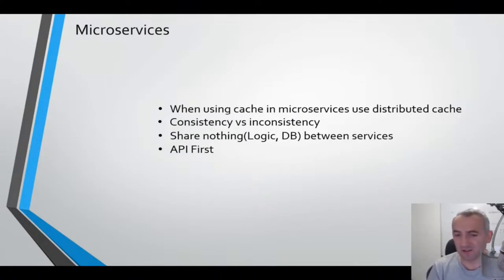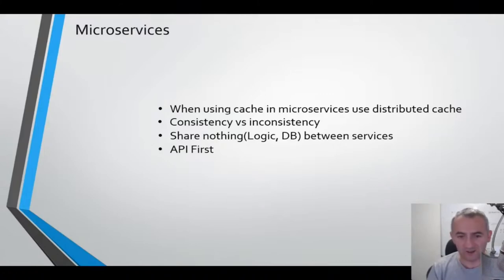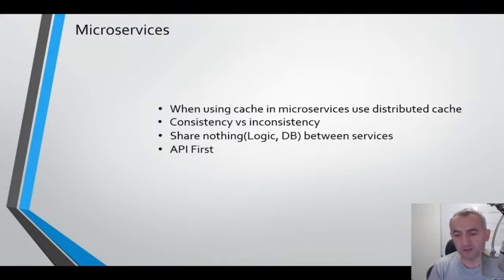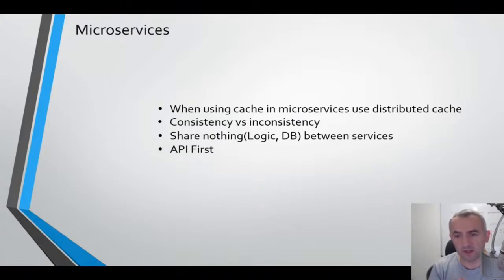Talking about microservices and Service Bus in 20 minutes is just scratching the surface, as this subject is very big. When using microservice architecture, try not to save your cache within one service's memory, because if you run multiple instances of the same service, the cache might differ between instances. That's why you should use distributed cache. Also consider consistency versus inconsistency — consistency can be painful to guarantee 100% with microservices.